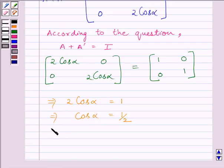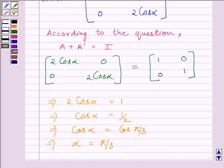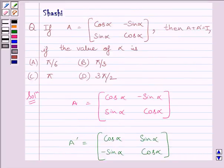This further implies cos alpha is equal to cos(pi upon 3), since we know cos(pi upon 3) is equal to 1 upon 2. Substituting cos(pi upon 3) in place of 1 upon 2, this implies alpha is equal to pi upon 3. So the value of alpha is pi upon 3, and our required answer is B.